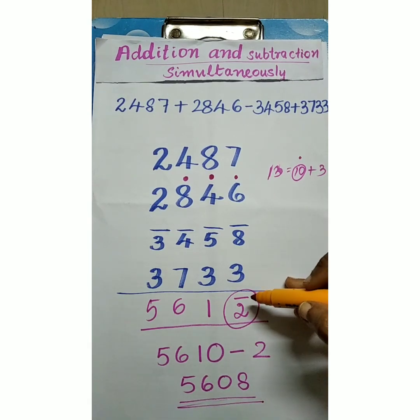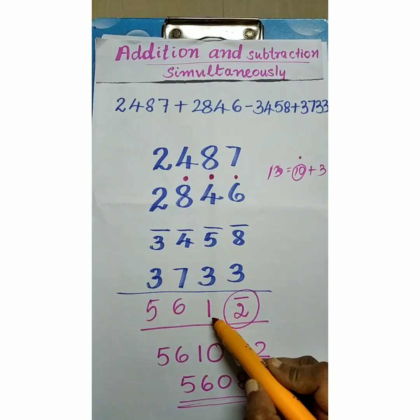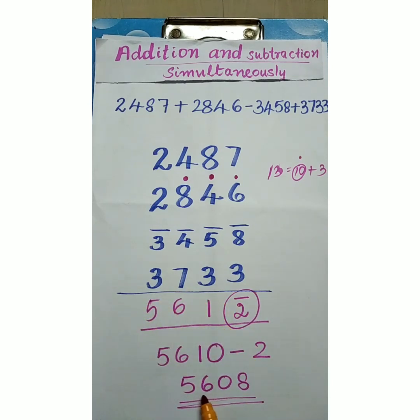Or we are applying here Nikilam. 1 minus 2. That is 10 minus 2 is 8. And here in this group we are reducing one digit. That is 5 6 0. So the result is 5 6 0 8.